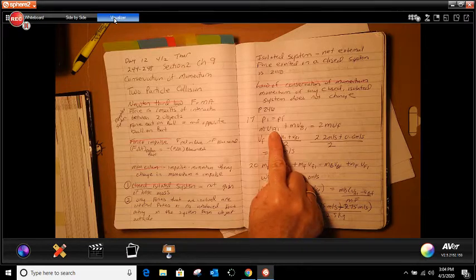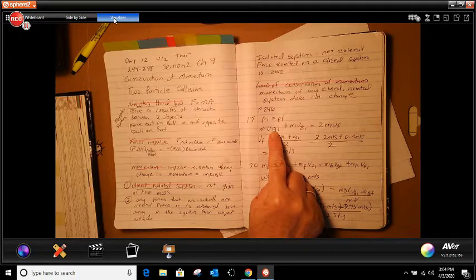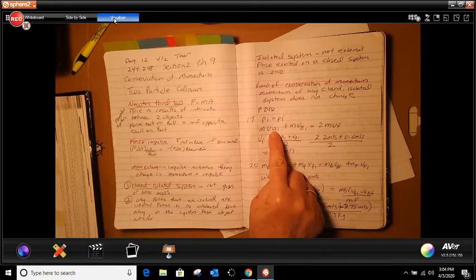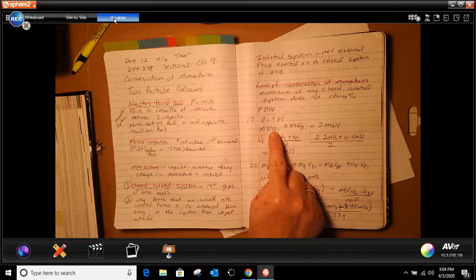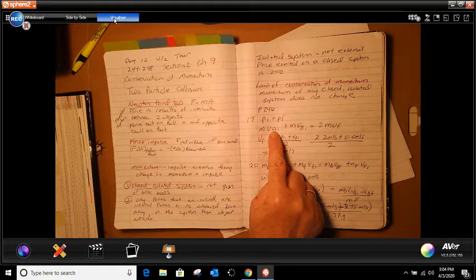Two freight cars, each have a mass of 3.0 times 10 to the fifth. Well, that's the mass of them, right? Collide and stick together. One was initially moving at 2.2 meters per second and the other was at rest. What was the final speed of the system of the two cars.